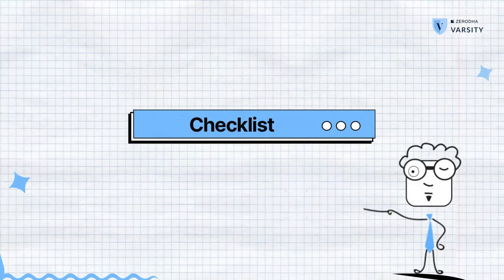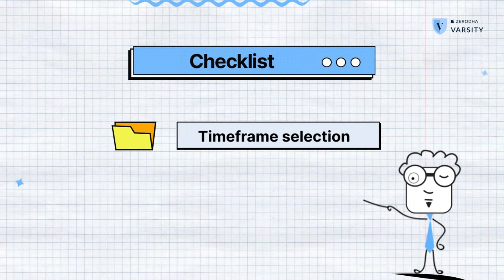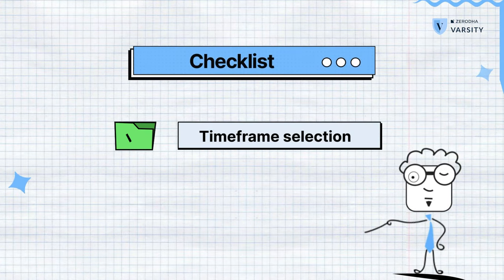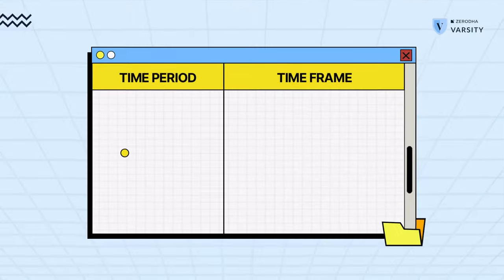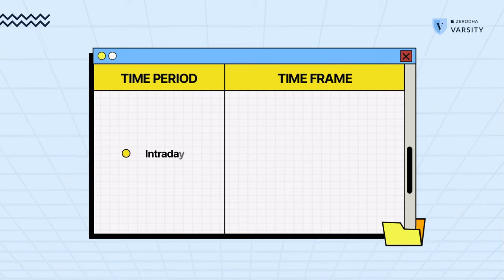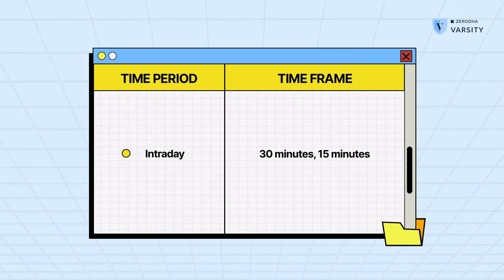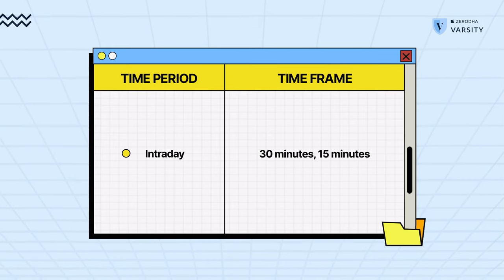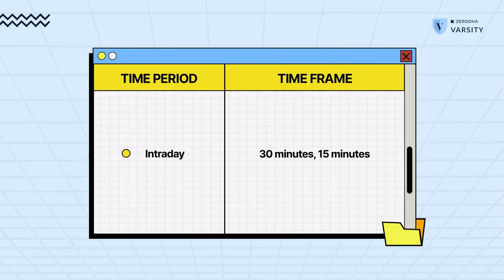Now I'm going to try to make sure you get some guide to actually get started. So here is a useful checklist for you. Choose a time frame that corresponds to how you want to trade. If you want to trade intraday, choose a time frame like the 30-minute or 15-minute, and not something like the daily or the weekly.